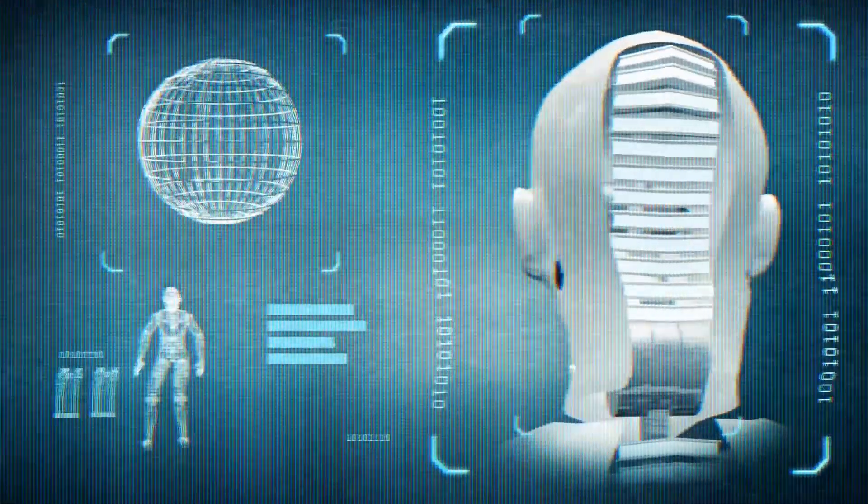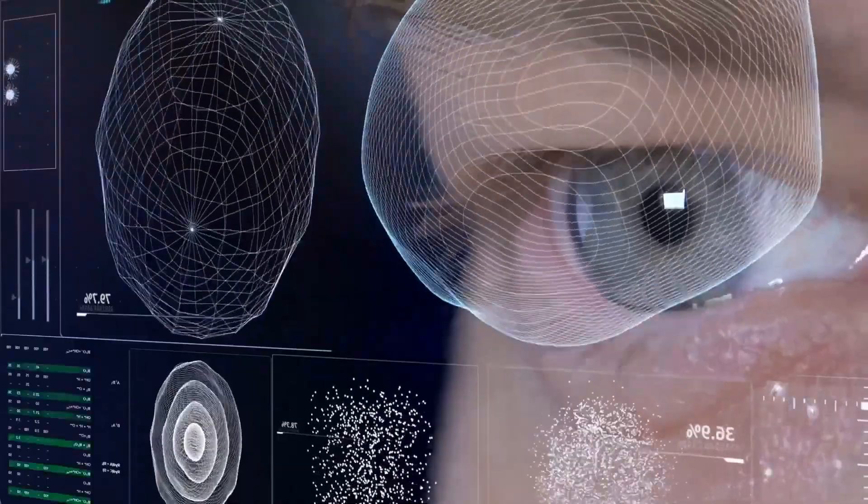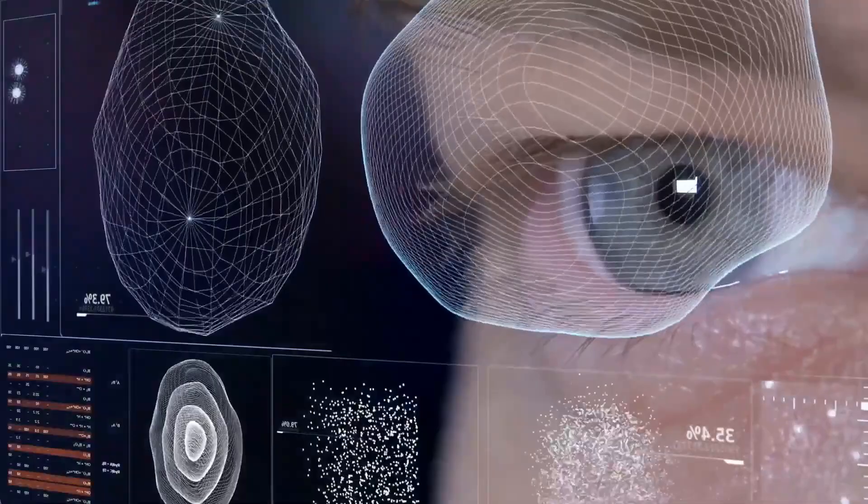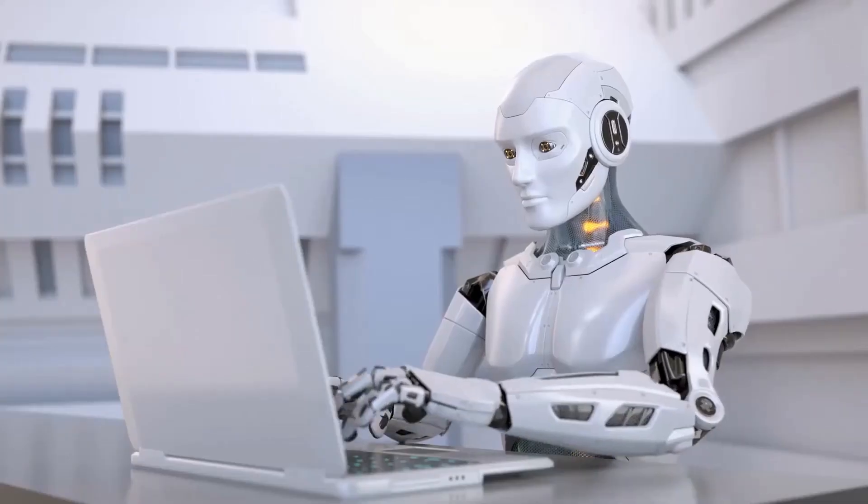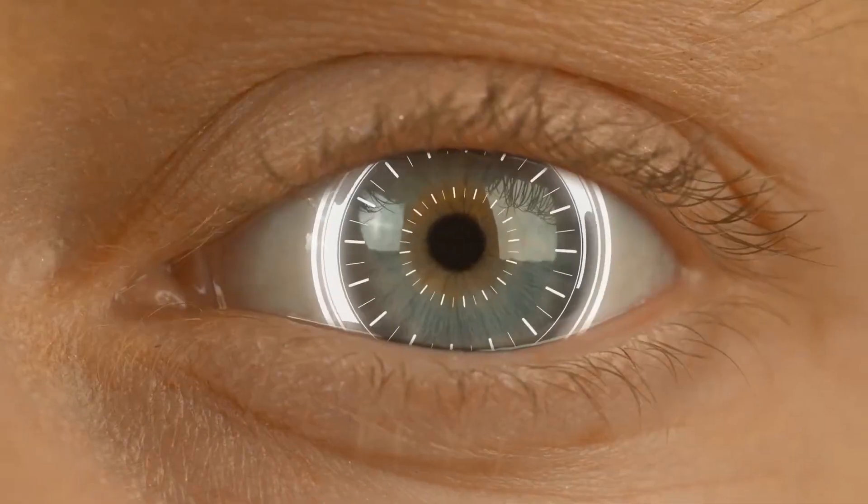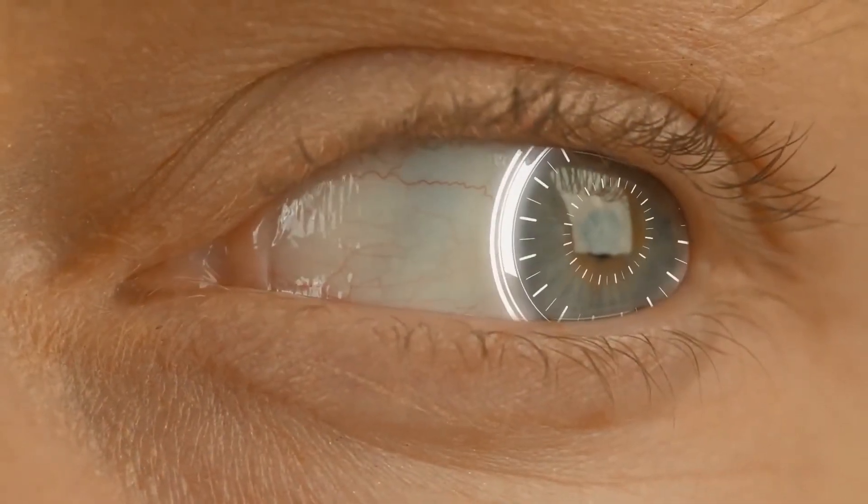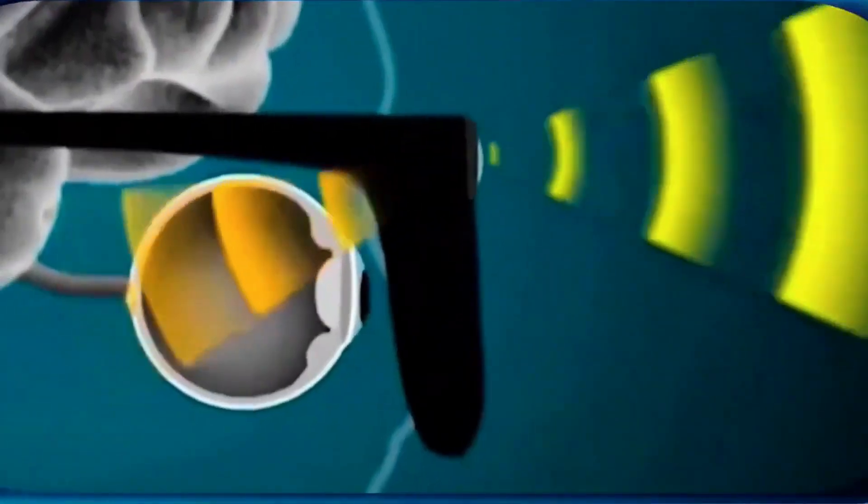The first bionic eye was developed in the 1980s, and since then significant progress has been made in improving the technology. Today there are several different types of bionic eyes available, including those that are partially implanted and those that are completely implanted.